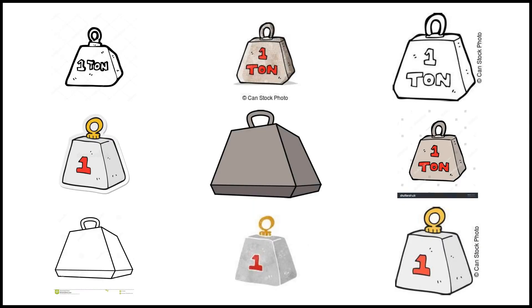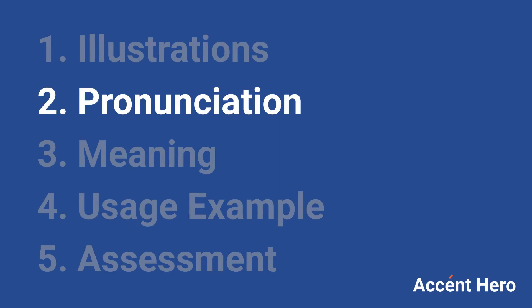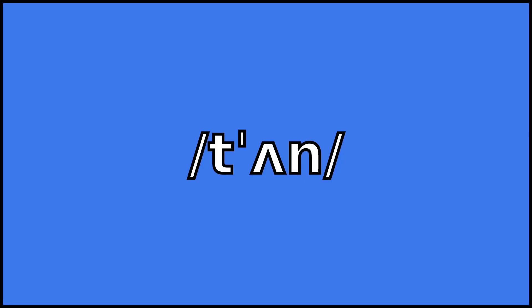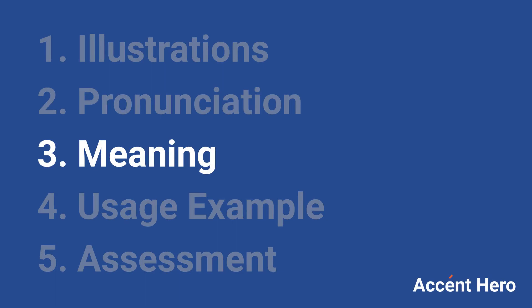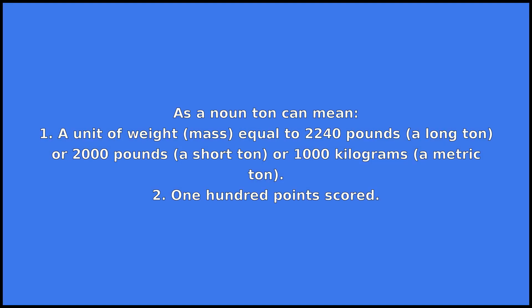Ton. Ton is a noun. As a noun, ton can mean: 1. A unit of weight equal to 2,240 pounds (a long ton) or 2,000 pounds (a short ton) or 1,000 kilograms — a metric ton.